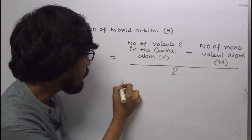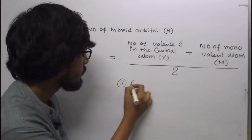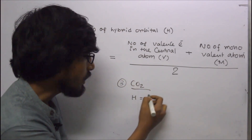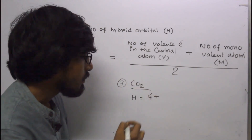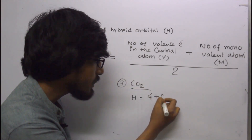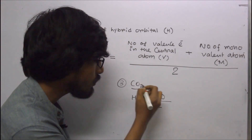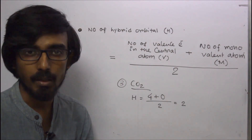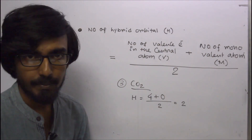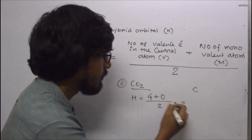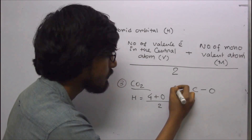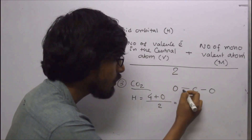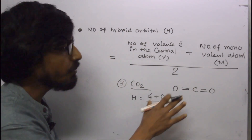For CO2: number of hybrid orbitals = (valence electrons of carbon + monovalent atoms) ÷ 2 = (4 + 0) ÷ 2 = 2. The hybridization of carbon in CO2 is sp. Oxygen is bivalent and forms double bonds with carbon, and the shape of CO2 is linear.